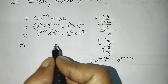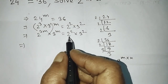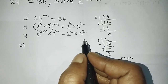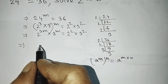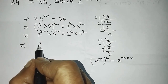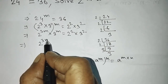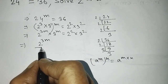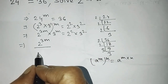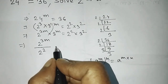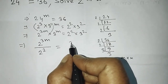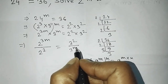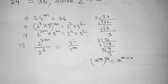After that, arrange the 2 terms on the left side and transpose the 3 terms to the right side. So 2 to the power 3m stays on the left, and 2 squared moves from the right side to become division. The right side becomes 3 squared divided by 3 to the power m.